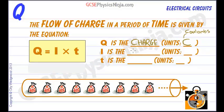I is the current that's flowing. And the units of I, or the current, is the ampere or the amp.